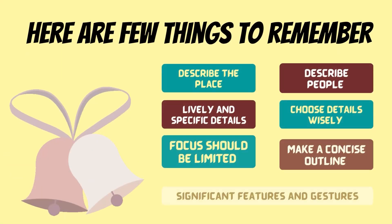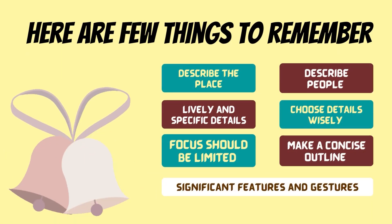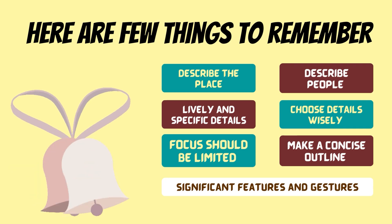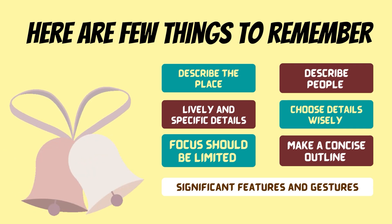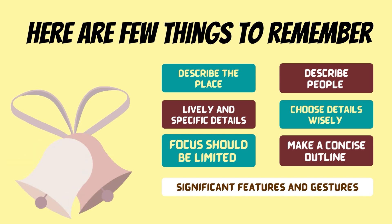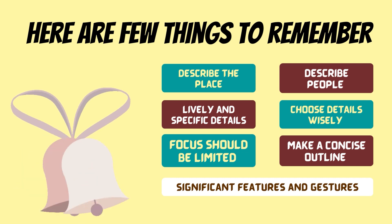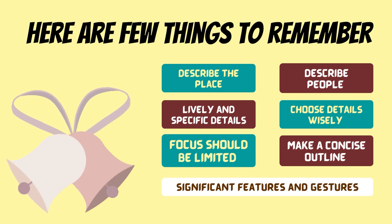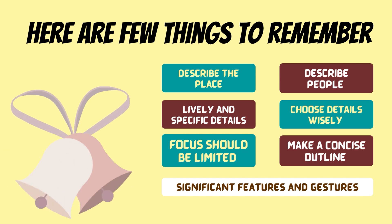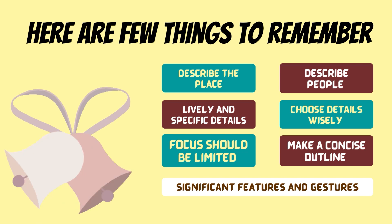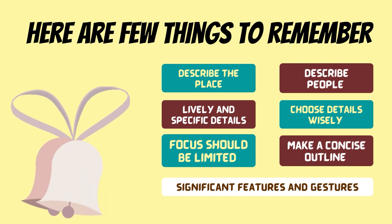Here are a few things to remember. Describe the place in snapshots. Use all your senses — how something looked, felt, sounded, and even tasted. Describe people by using dialogues wherever appropriate. Add significant features and gestures, but don't go overboard — choose details wisely. The author's focus should be limited to one or a few experiences. Details of events should be lively and specific. Make a concise outline.